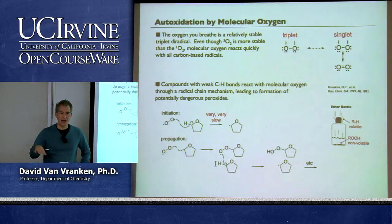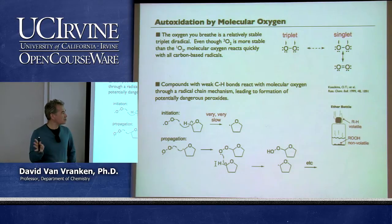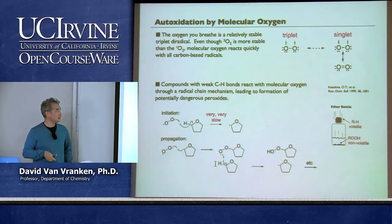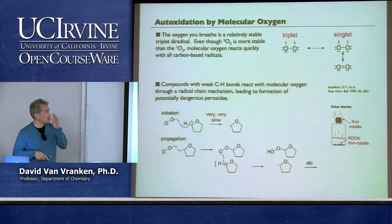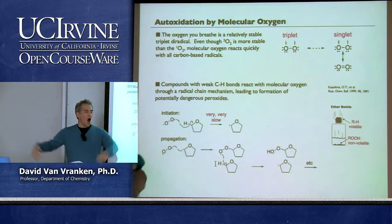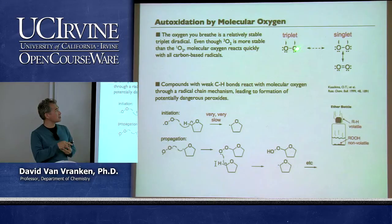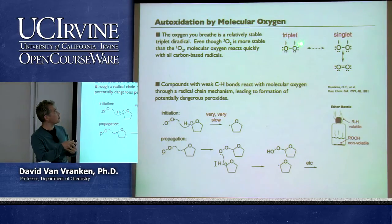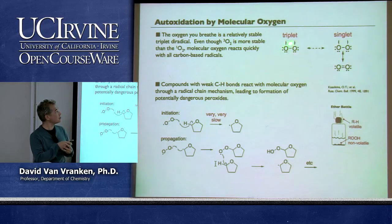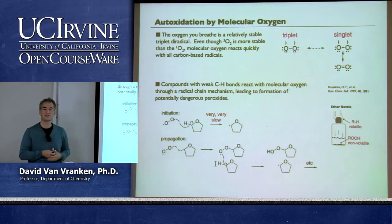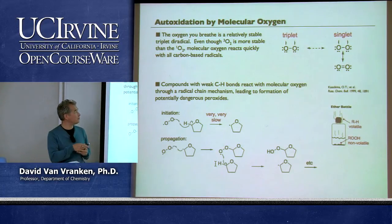When dealing with radical reactions, you must think about oxygen—in most cases you want to exclude it. The oxygen you breathe is in its ground state, a triplet diradical. If you draw the two electrons on each oxygen atom with their spins shown, you can see they are not matched to form a double bond—two electrons with the same spin cannot occupy the same orbital. To form a true double bond you'd need singlet oxygen, which is higher in energy.